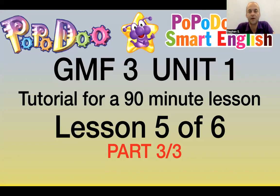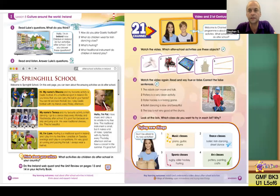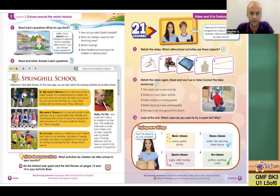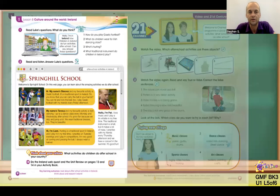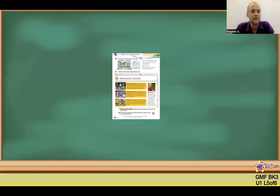Hello teachers and welcome back. Here's part three of three for lesson five, focusing on the channel 21 and cultural part of the Give Me Five series. We're going back to our reading for Spring Hill School. We had an interesting introduction — a blind reading, a cold reading, a cold start — just throwing the kids in the deep end. Now I'm going to do the teaching part.